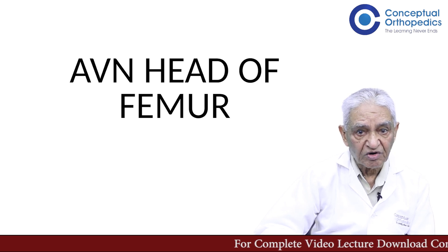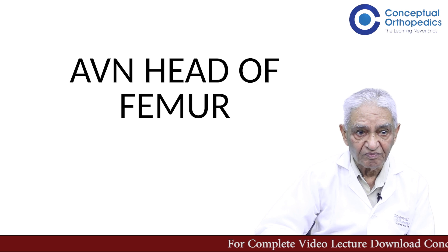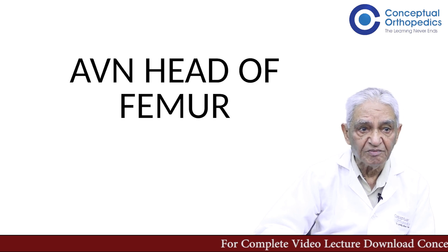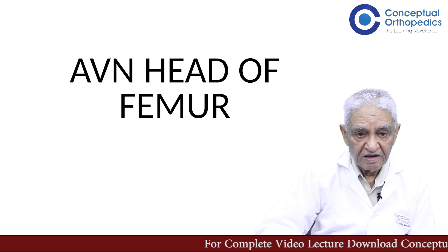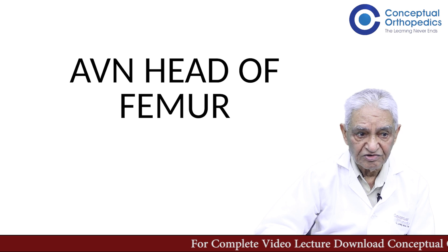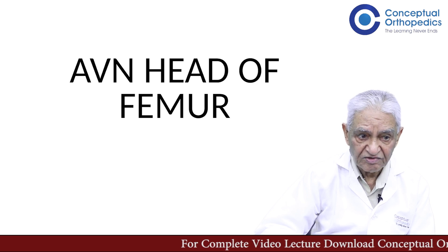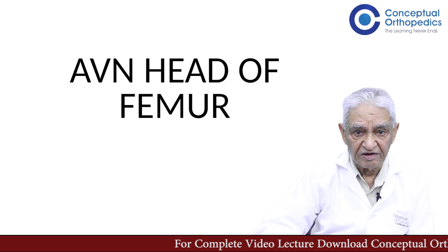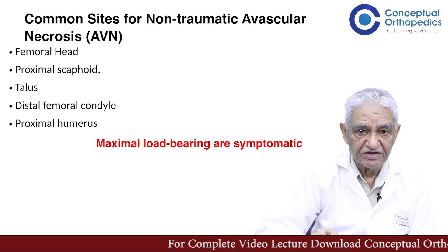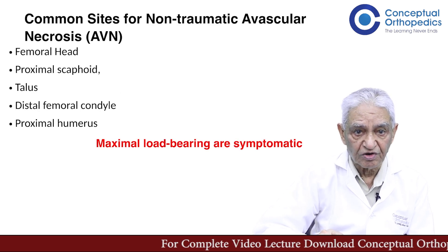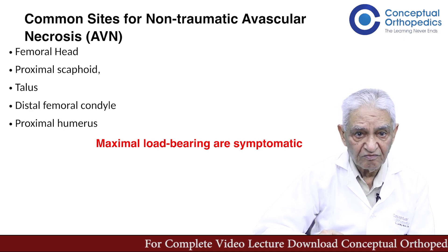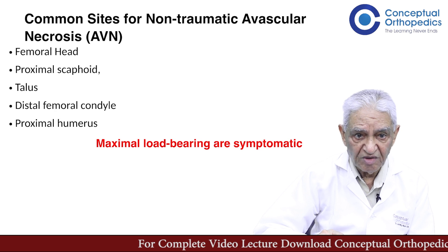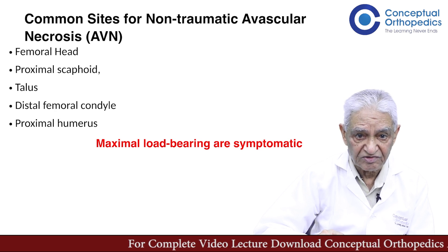Though we will be talking about AVN of the femoral head, AVN can also occur in many other bones. Those which are notorious are the femoral head, scaphoid, talus, and many others. Common sites for non-traumatic avascular necrosis are the proximal femur, proximal scaphoid, and proximal talus.